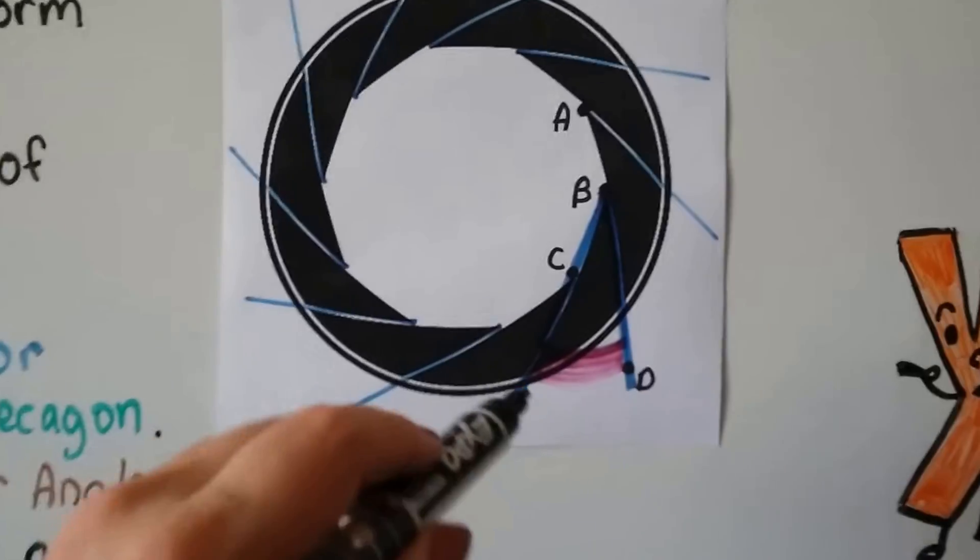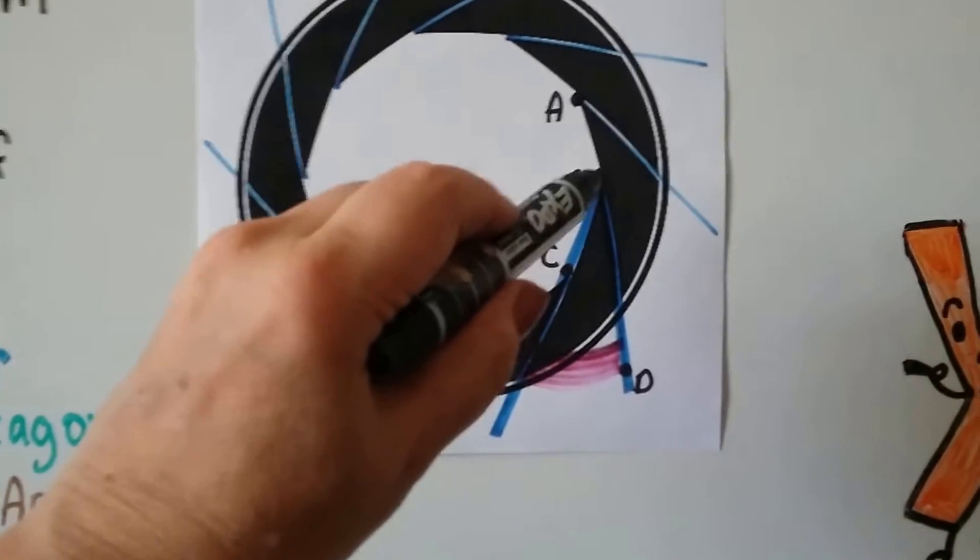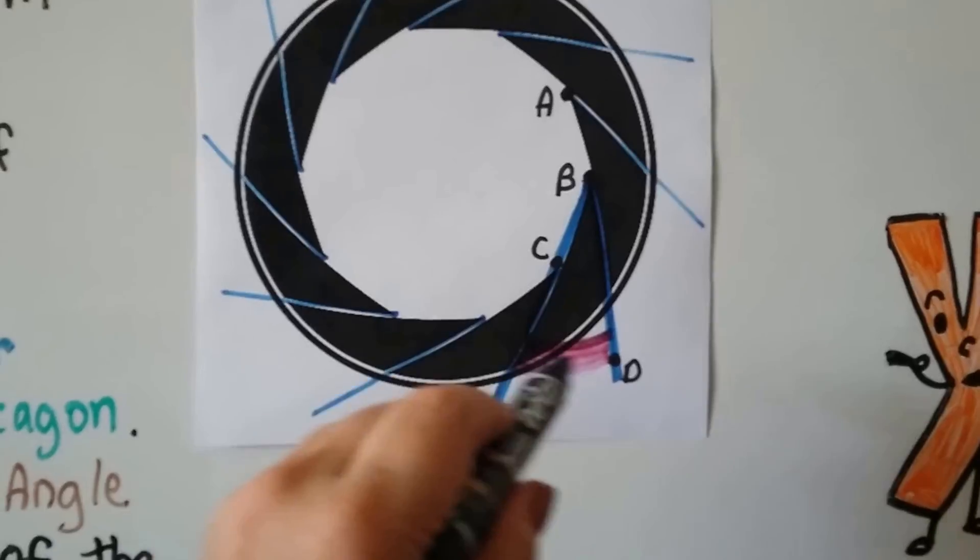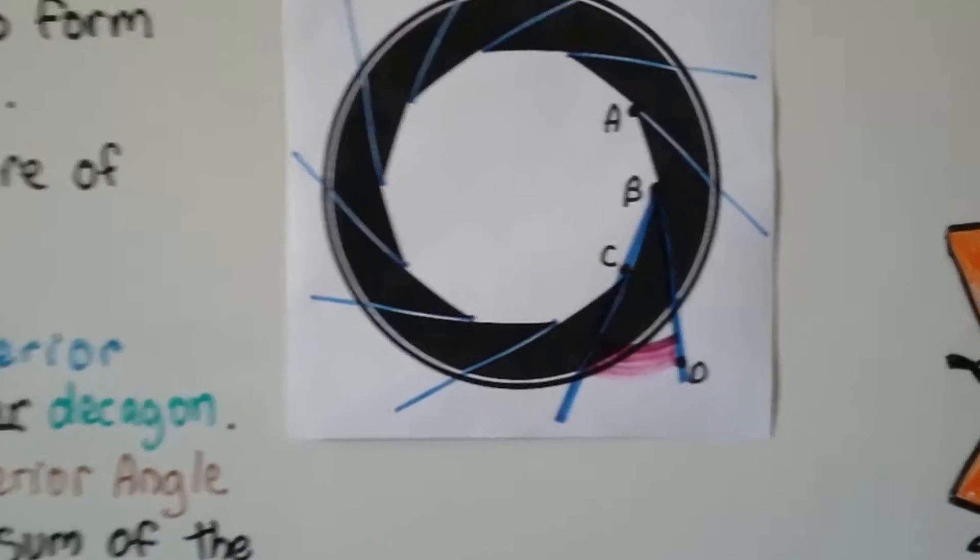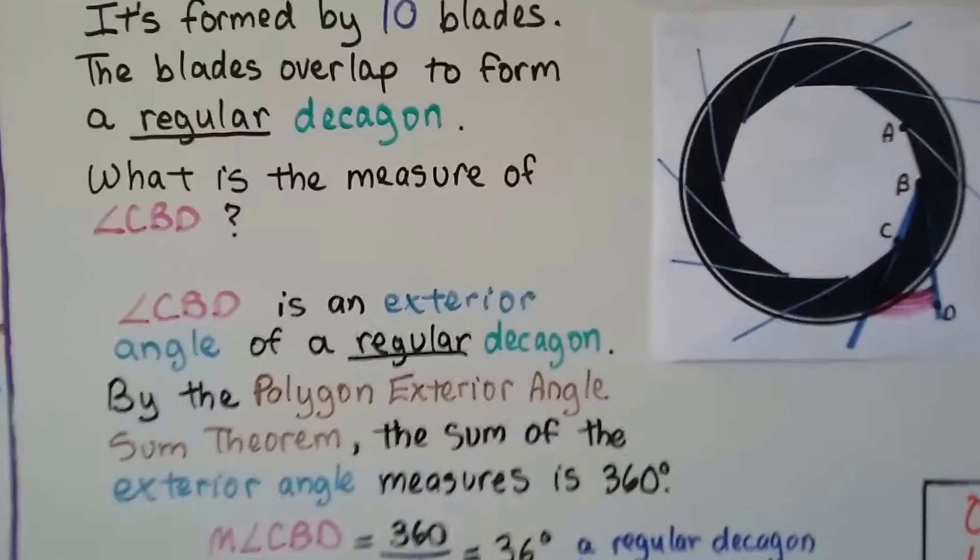So what's the measure of angle CBD? So it's kind of hard because this is black, but CBD would be C-B-D. So it's within this pink area here. That's what we're trying to find.